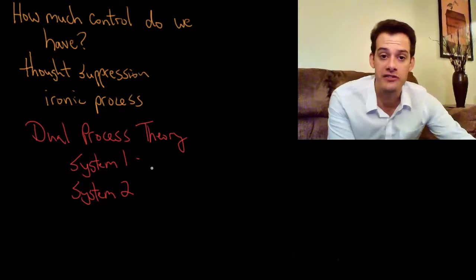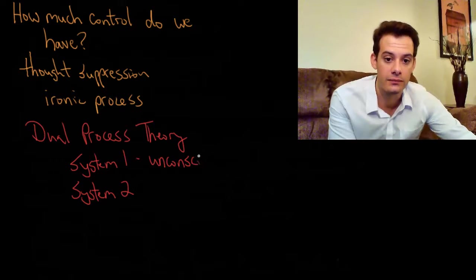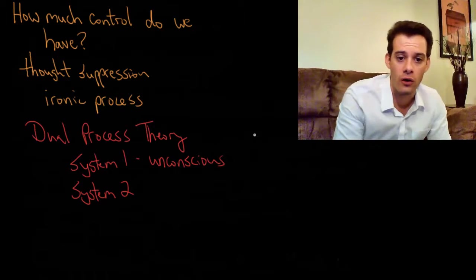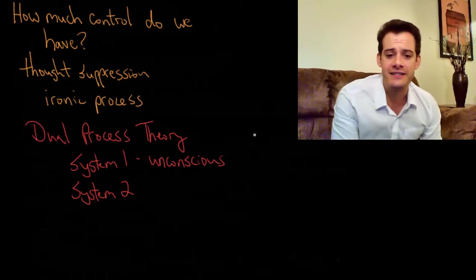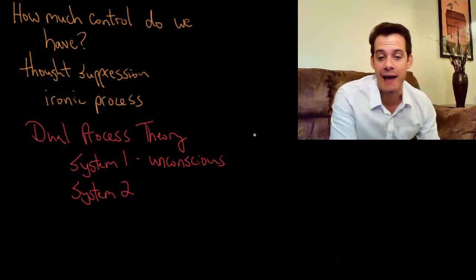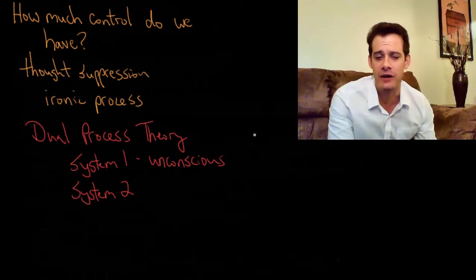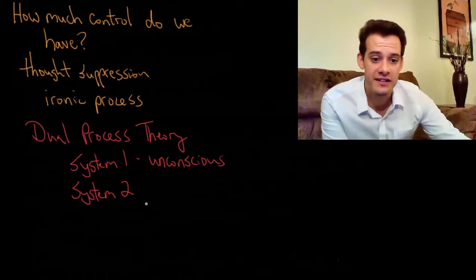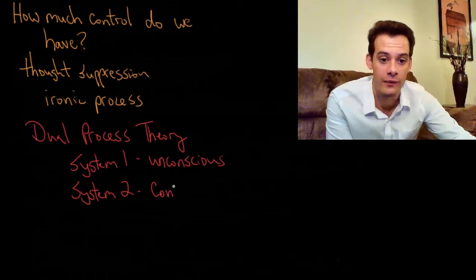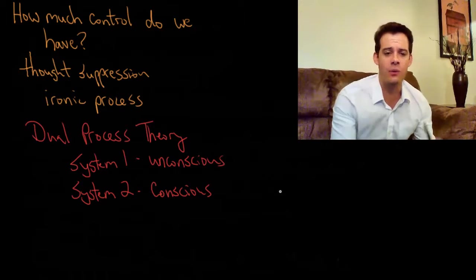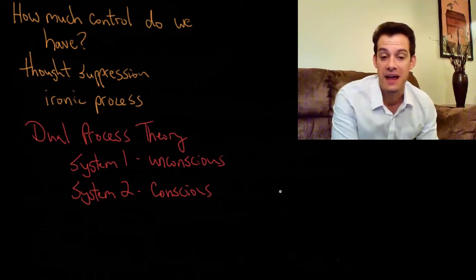System 1 refers to the unconscious processing. And this is also sometimes called the fast pathway or the low road. And the idea is this is like the quick and dirty processing that we do. And it happens beneath our awareness. We have this system that's collecting and analyzing information, and it's happening without us being aware of it. So this is System 1. And then System 2 is the conscious processing that we are aware of, that we have conscious access to. And this is also called the slow pathway or the high road. And the idea is this is where we can sort of deliberate and consider things and make decisions.